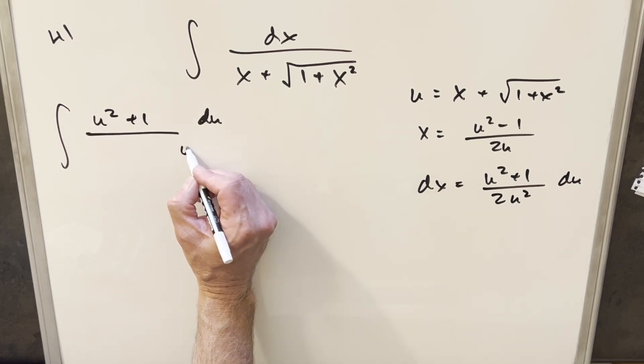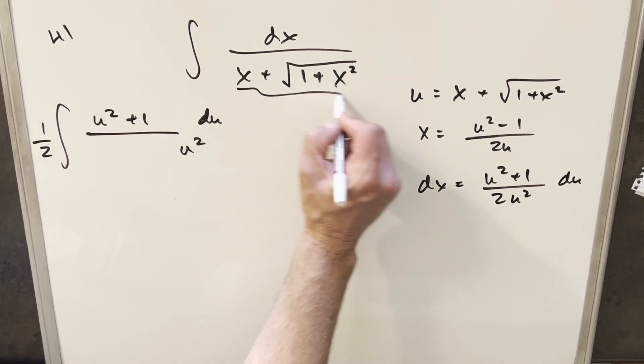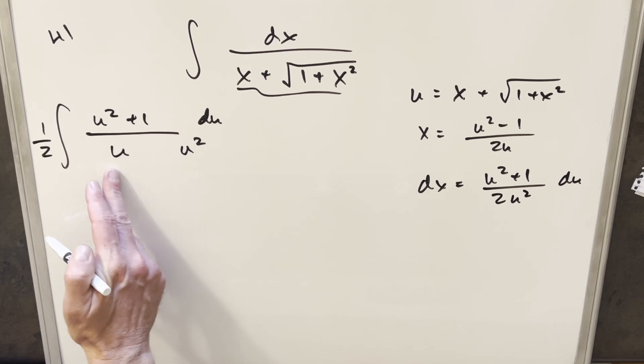I'll bring this over here, but for the 2, let's bring it up front as a 1 half. And then all this again is just u, so we have a u right there. But I can multiply u times u squared, we can get a u cubed right there.